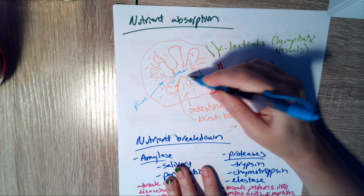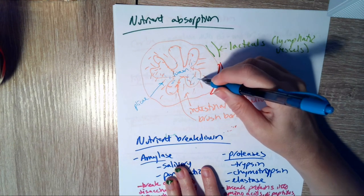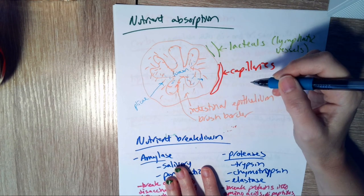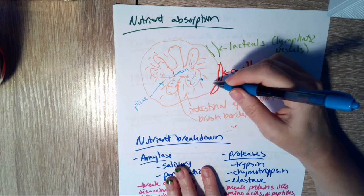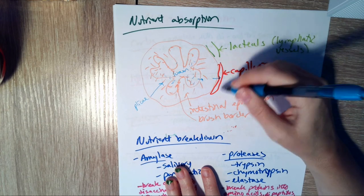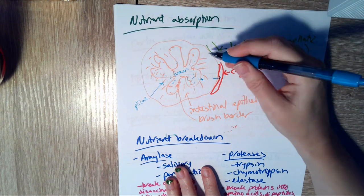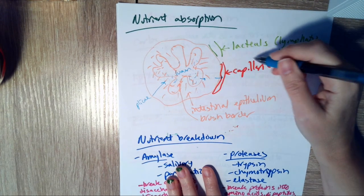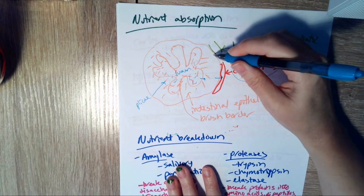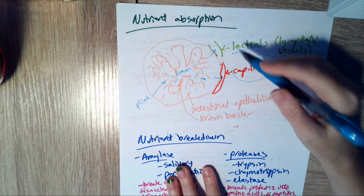So any nutrients that are in the lumen of the intestinal tract here need to pass into the cells of the intestinal epithelium, and then go into the capillaries so that you can have it in your blood and other cells in your body can have those nutrients. Now fats are too big to fit into the capillaries. So they're going to go into the lacteals, which are lymphatic vessels, which are a little bit bigger.